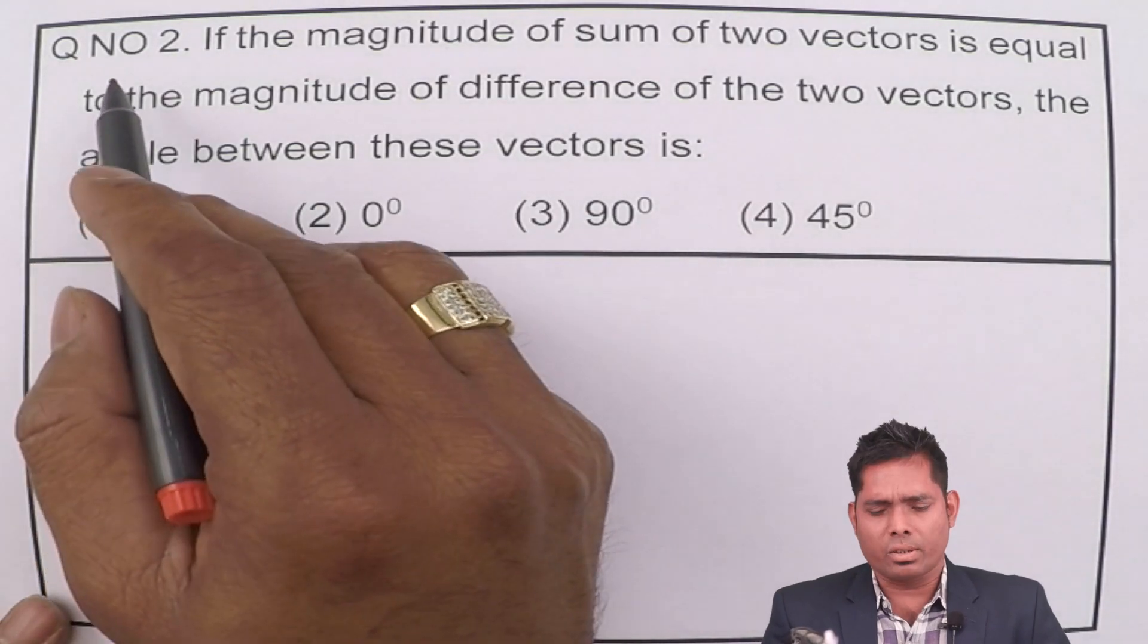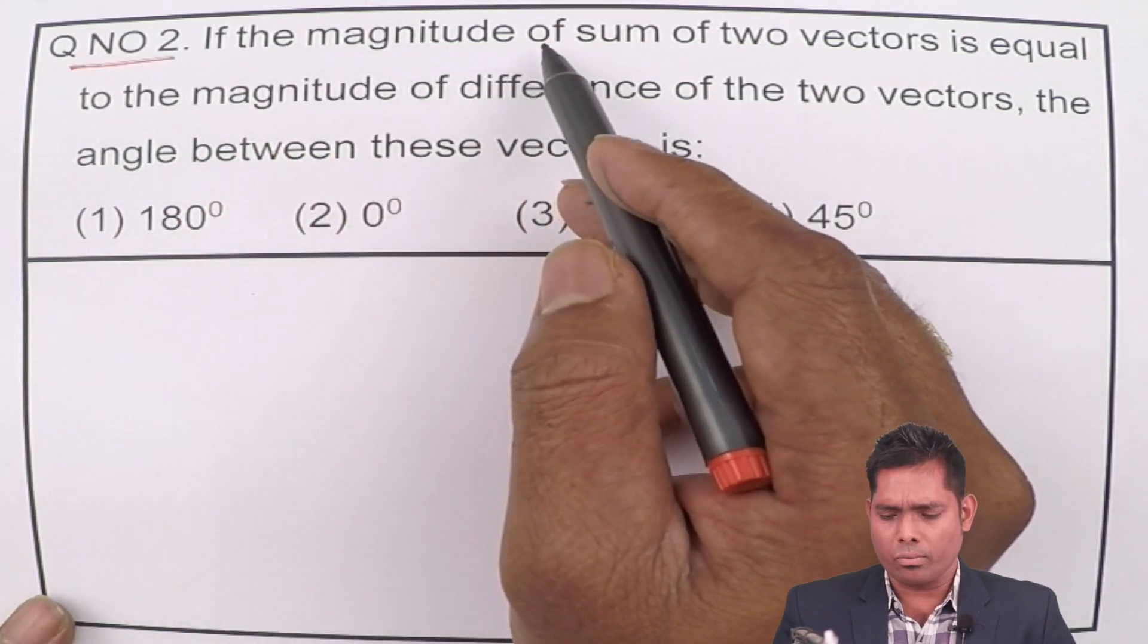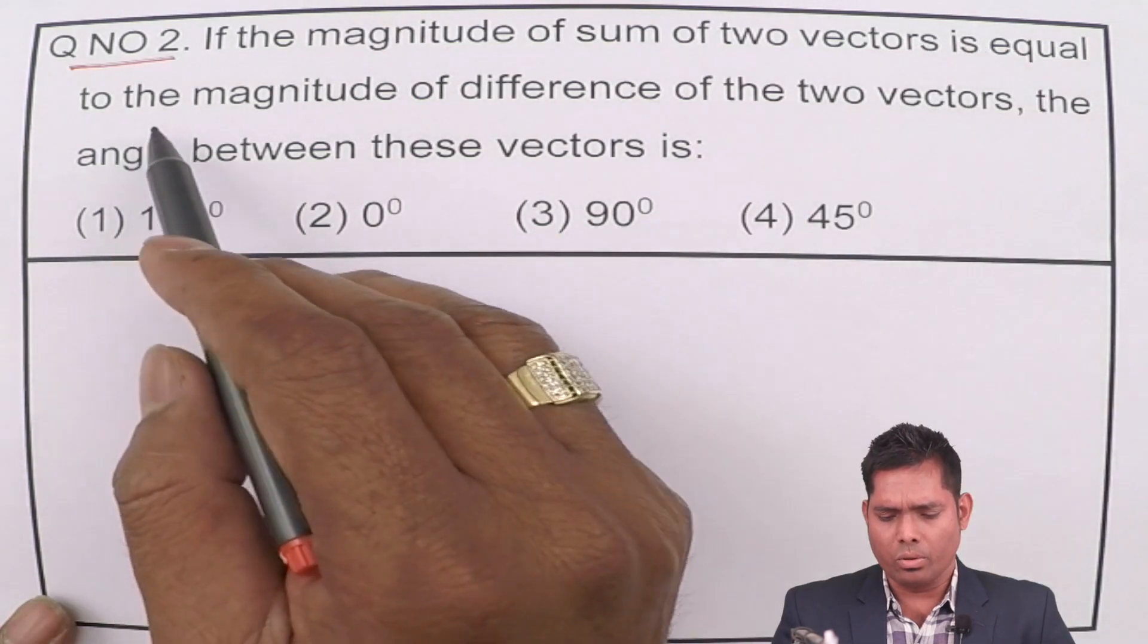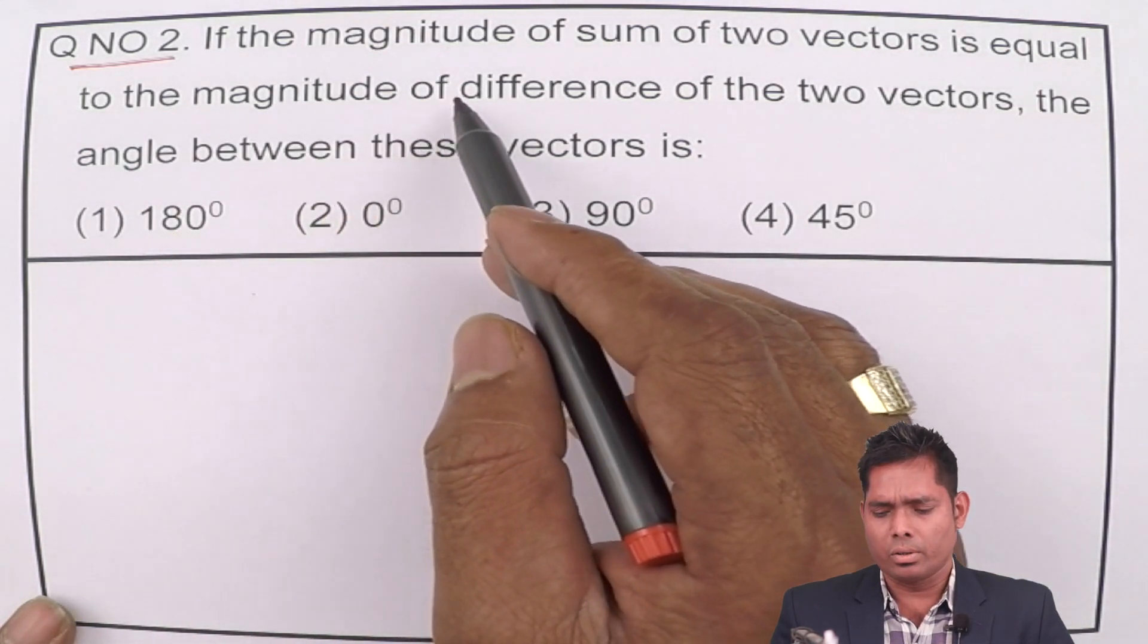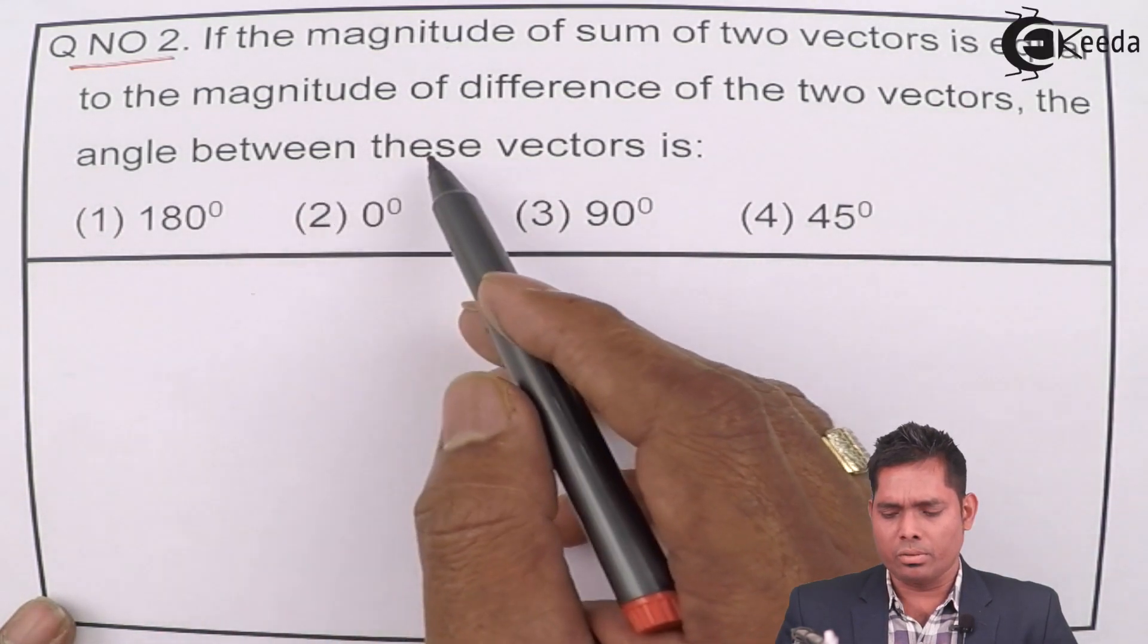Let us solve question number 2 which says if the magnitude of sum of two vectors is equal to the magnitude of difference of the two vectors, the angle between these vectors is.